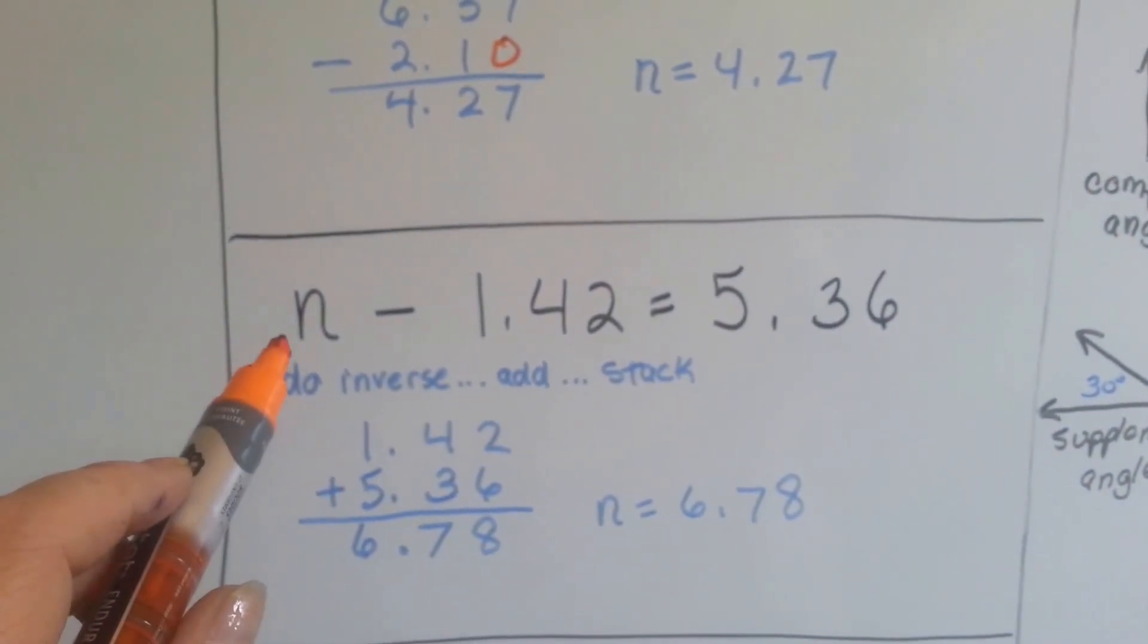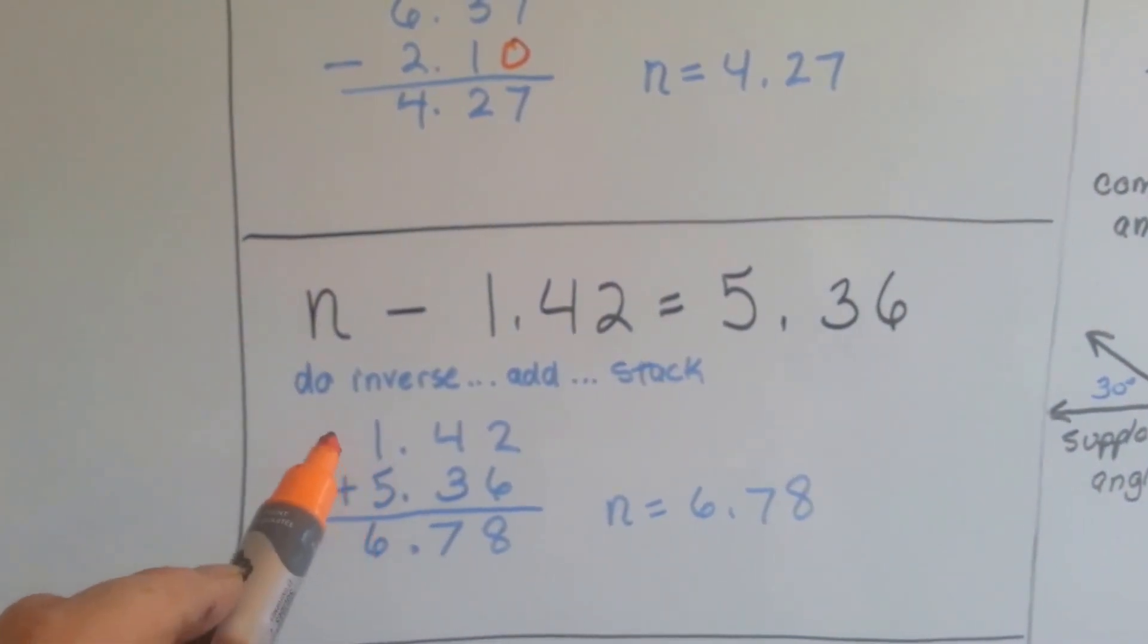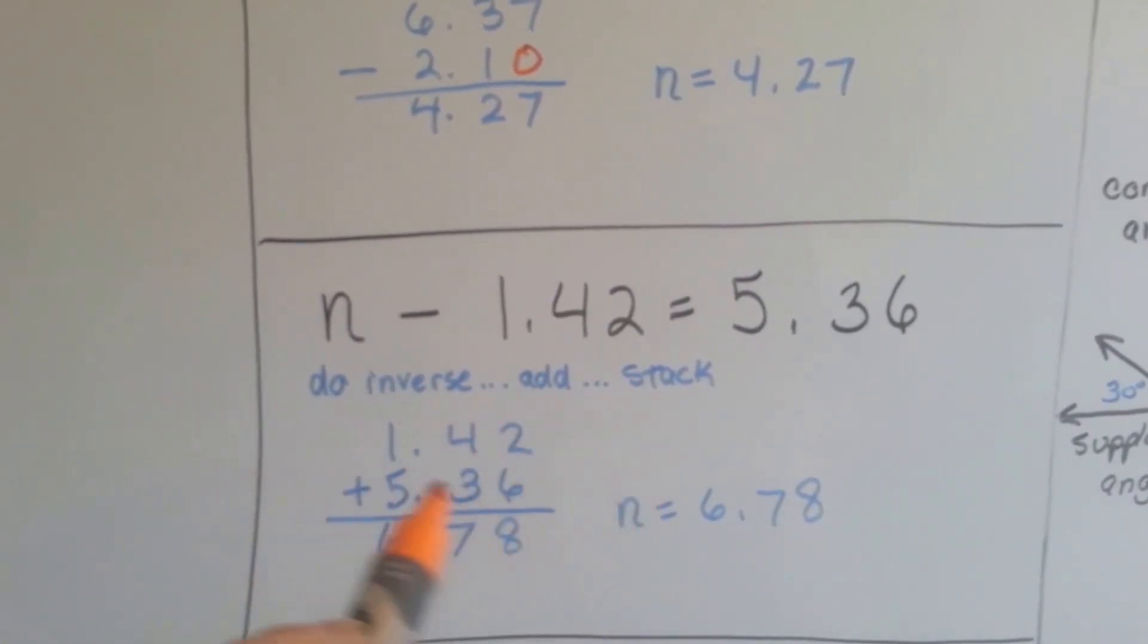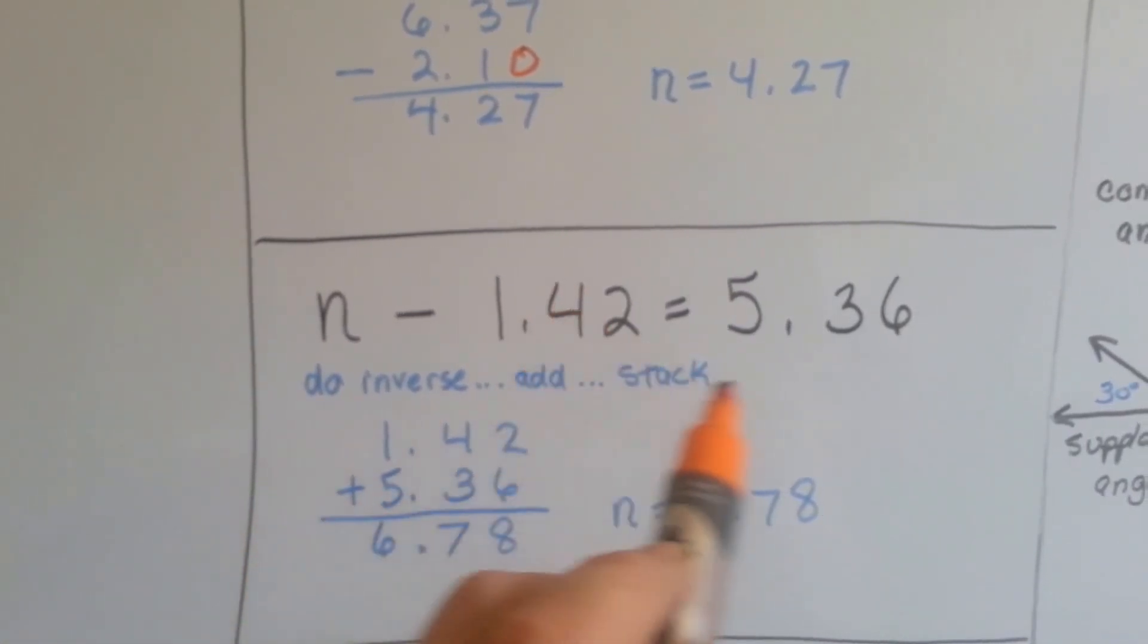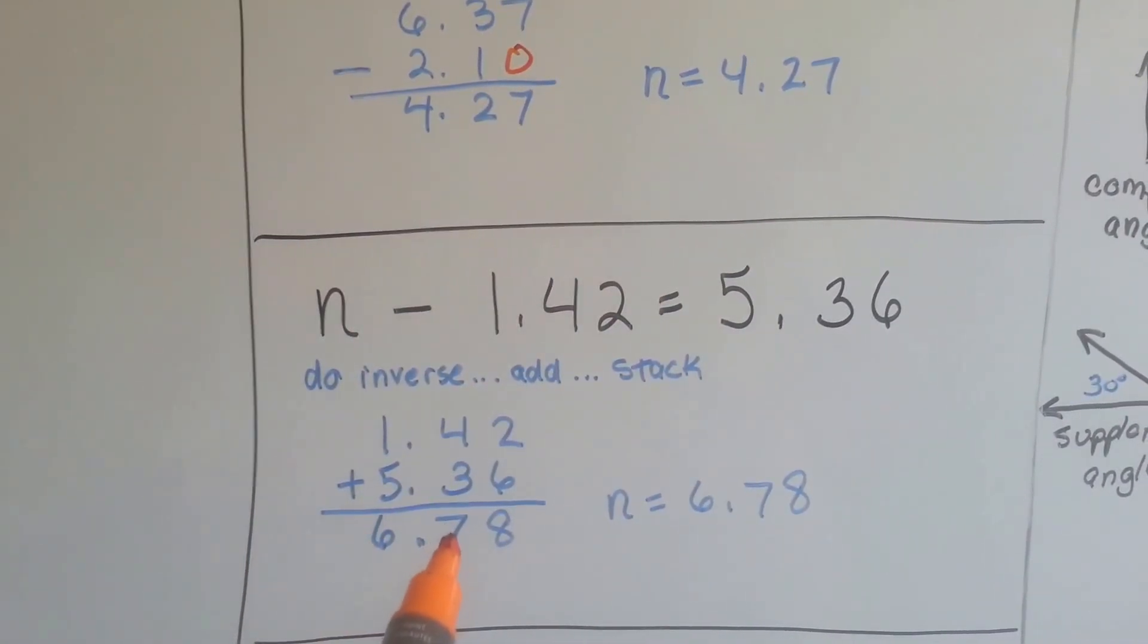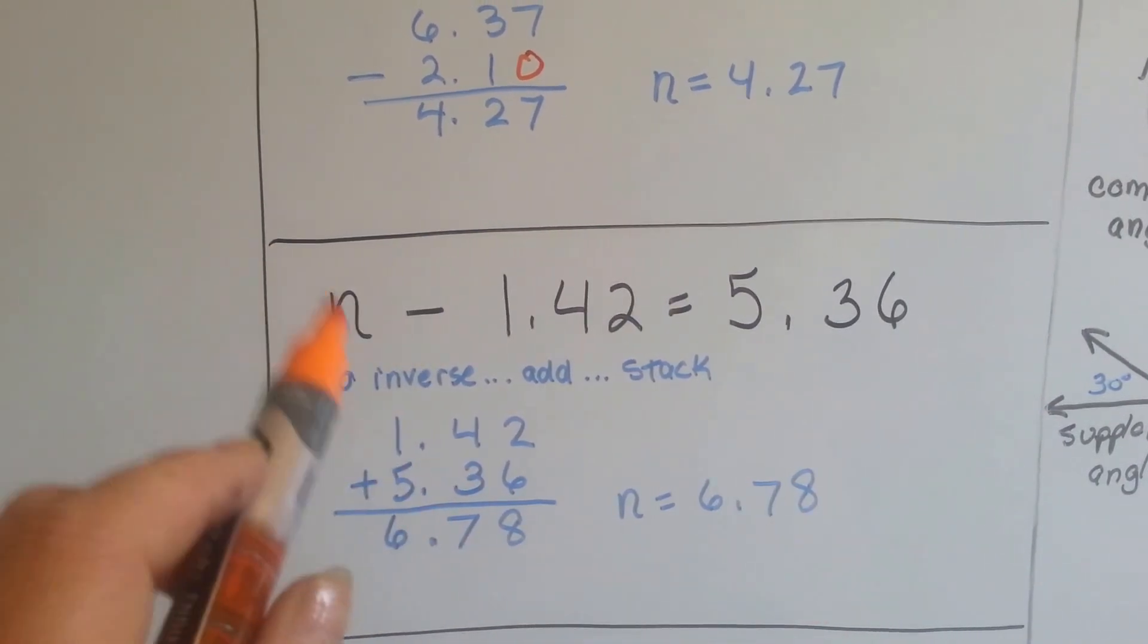If the first number is n, all we have to do is the inverse, don't we? If we're doing subtraction, the inverse is adding. We can stack them and add this number to the difference and we get 6 and 78 hundredths. So n is 6 and 78 hundredths.